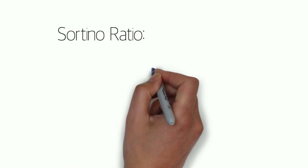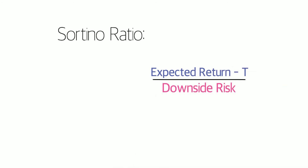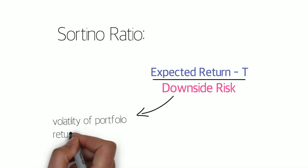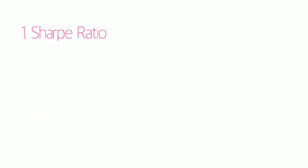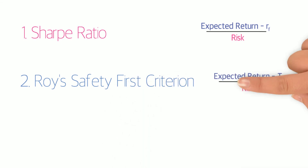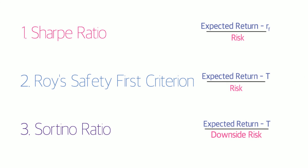The Sortino ratio is expressed as expected return minus T over downside risk. In Smart Risk Analytics, downside risk is calculated using the volatility of the portfolio returns that are below the target. In this video, we introduce three risk-adjusted return ratios that you can use to compare and rank portfolios. The Sharpe Ratio is the most well-known and the industry standard, but we also encourage you to think about Roy's Safety First Criterion if you have a target return, and the Sortino ratio if you have a target return and you care more about downside risk.